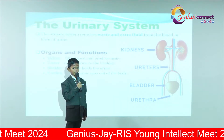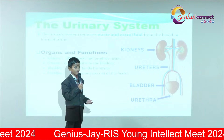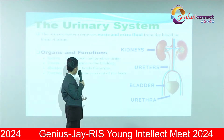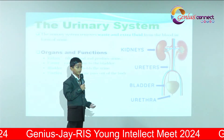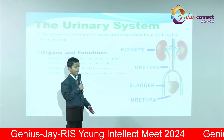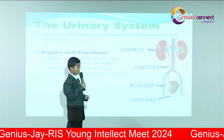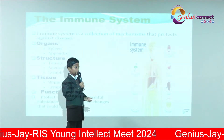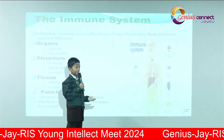The urinary system removes extra waste and fluids from blood in the form of urine. Organs and functions: kidneys filter the blood and make urine. The ureter carries urine to the bladder. The bladder holds the urine. The urethra allows the urine to pass out of the body. The urinary system protects against infections and diseases.